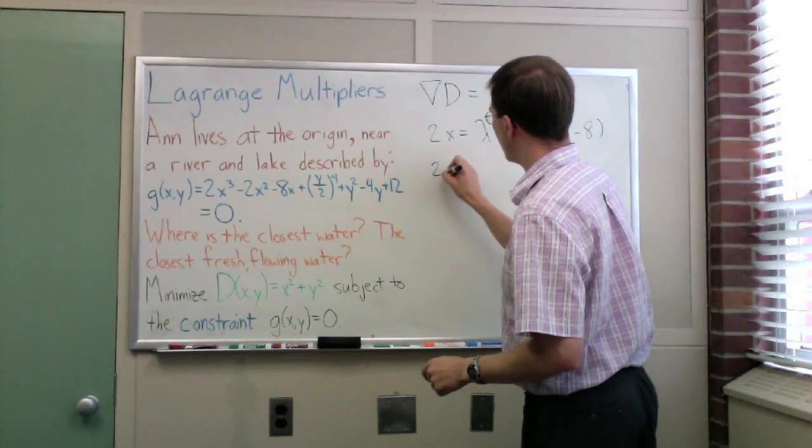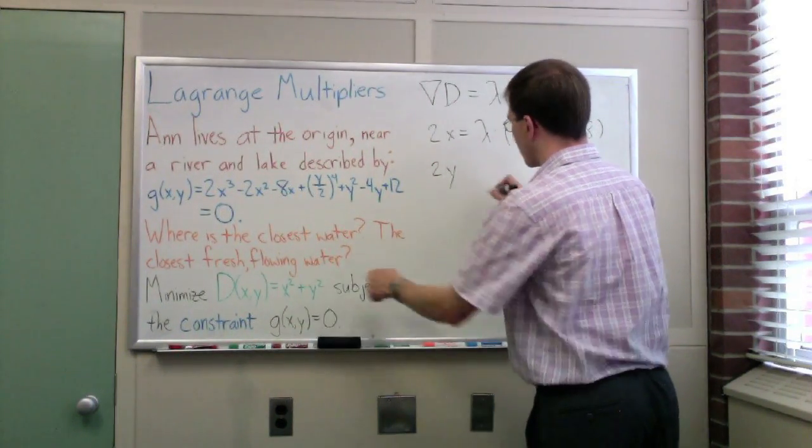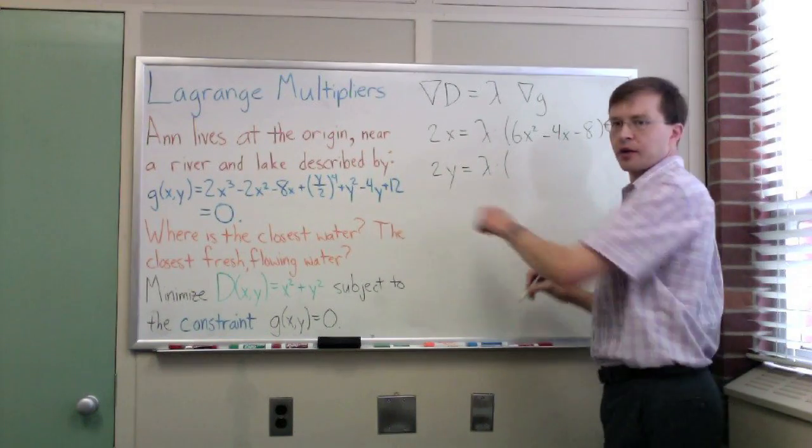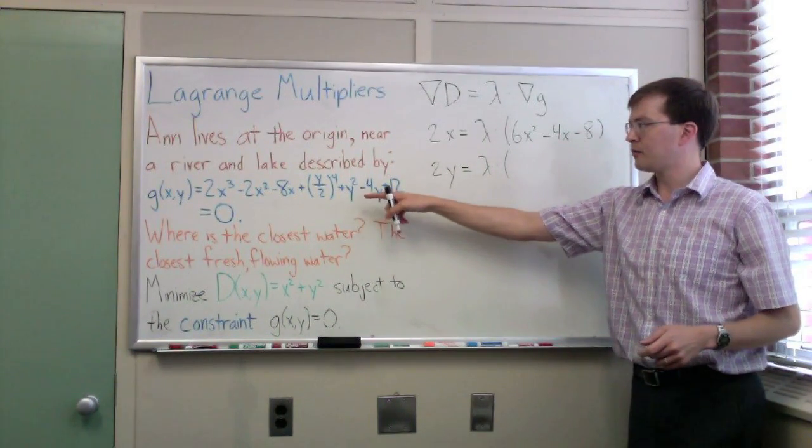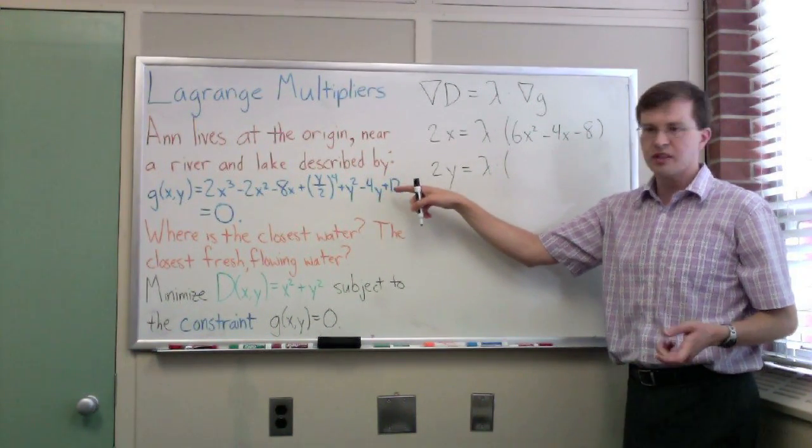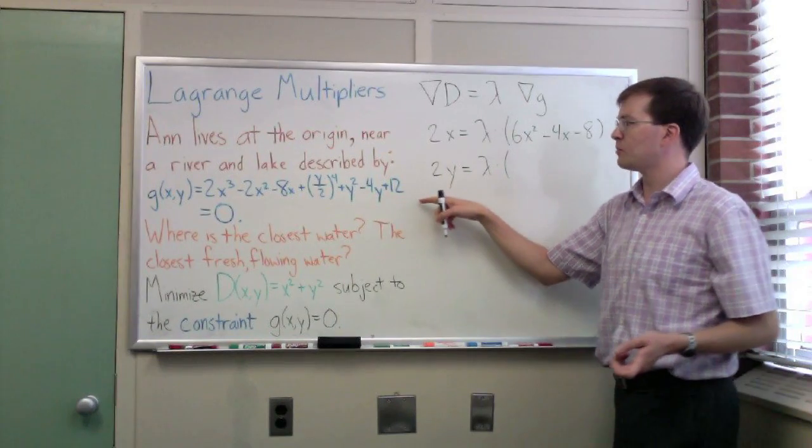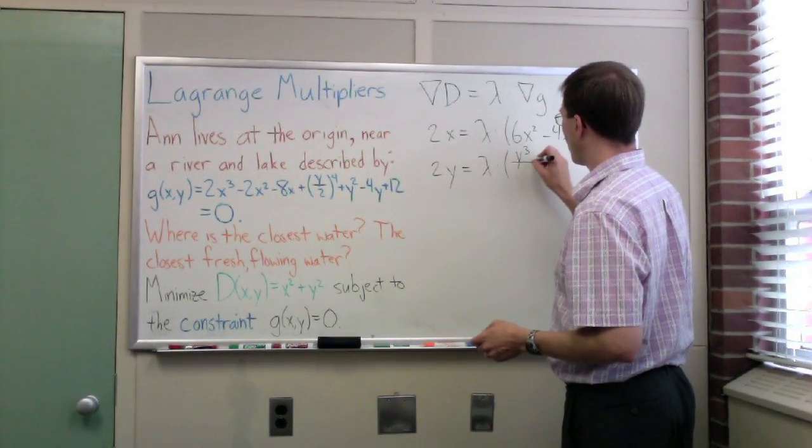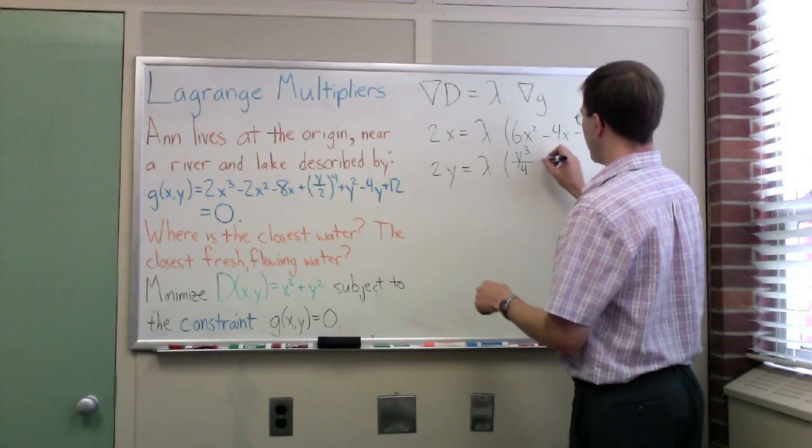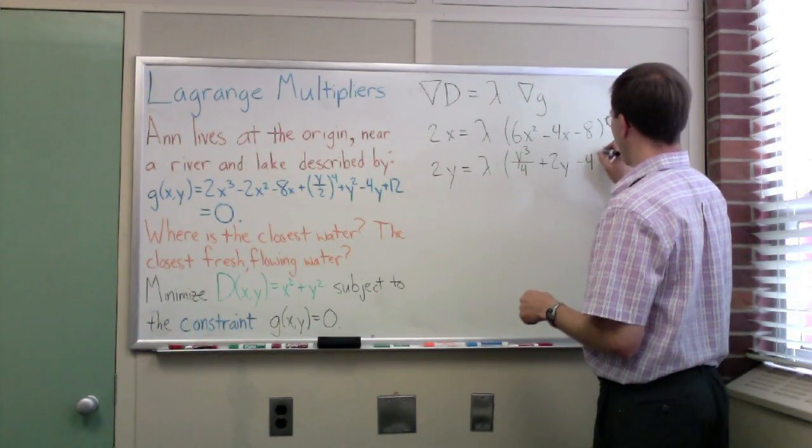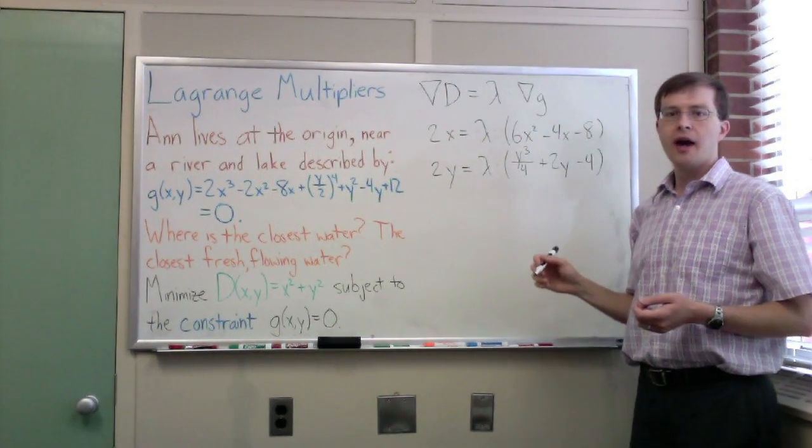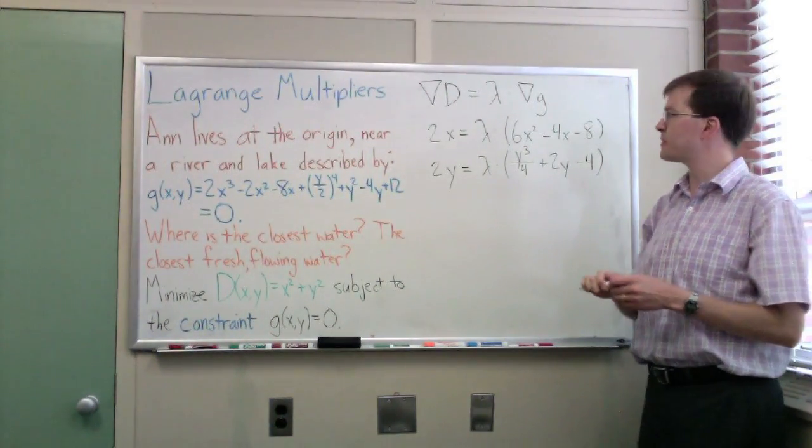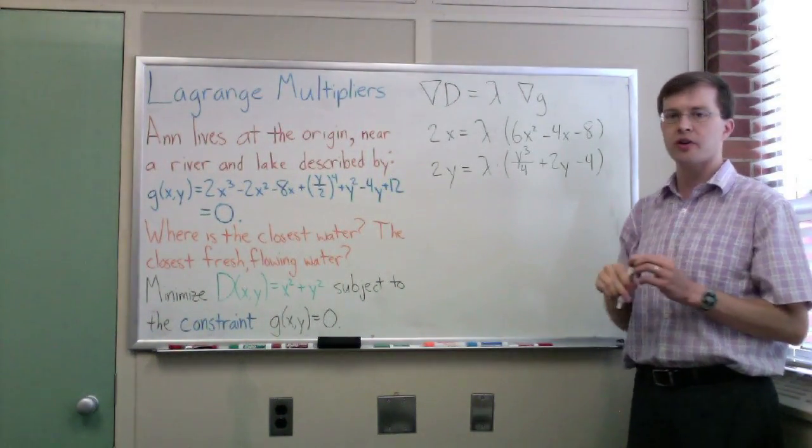And then the y component will be 2y, the partial of d with respect to y, equals lambda times, and again, we can take the gradient here, the gradient of the g, looking at its y component, partial with respect to y. That ends up being y cubed over 4 plus 2y minus 4. So there we have our two equations that come out of Lagrange multipliers here, that come out of this vector equation, our two component equations.